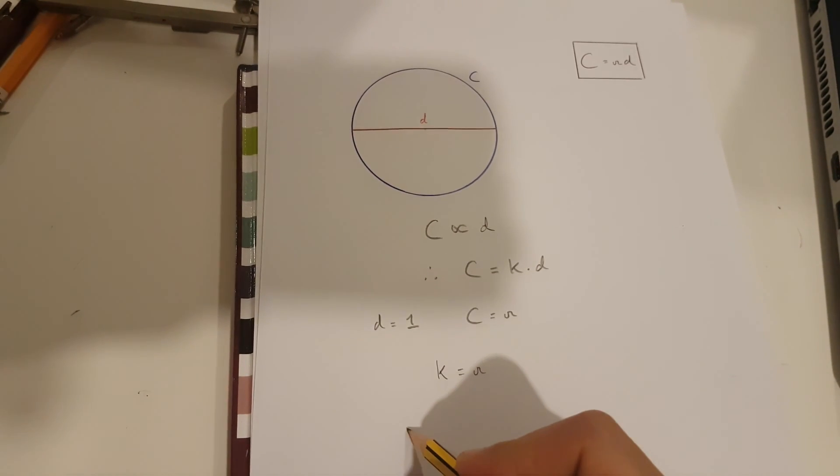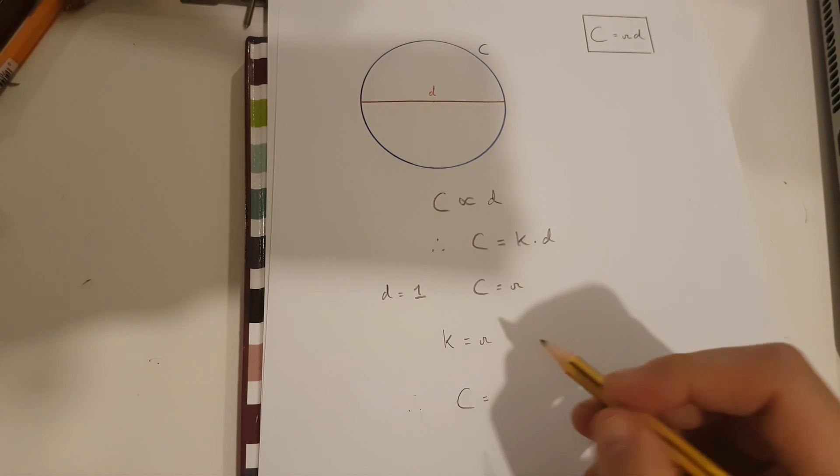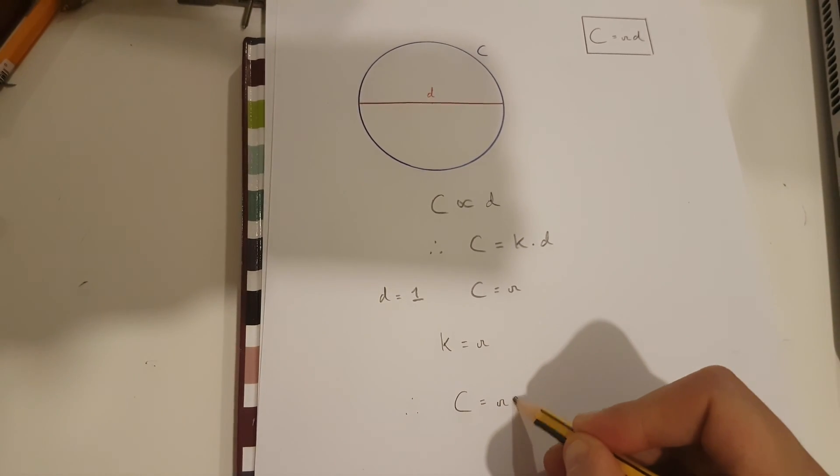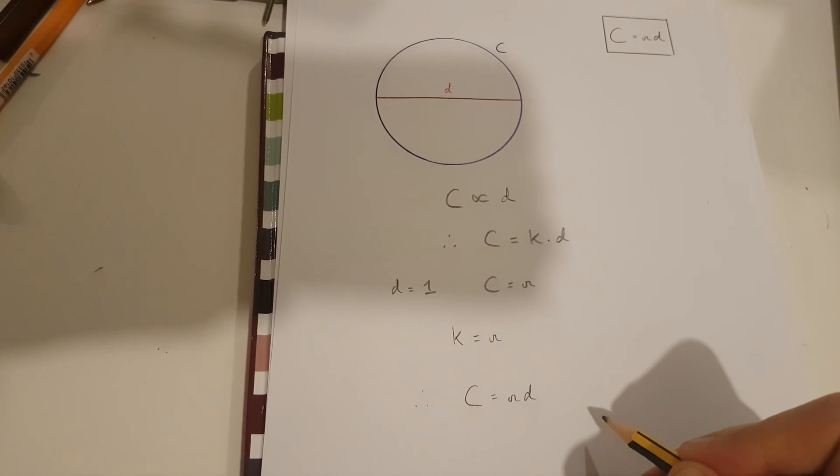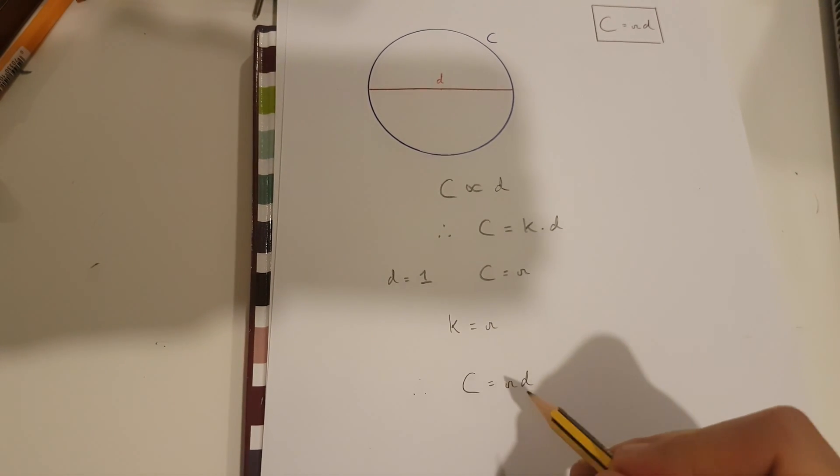And this means that the circumference is equal to pi times diameter. Therefore, we've proven this.